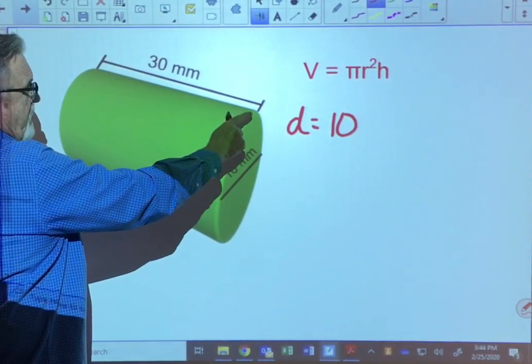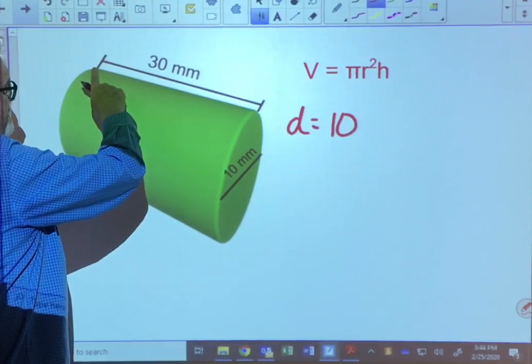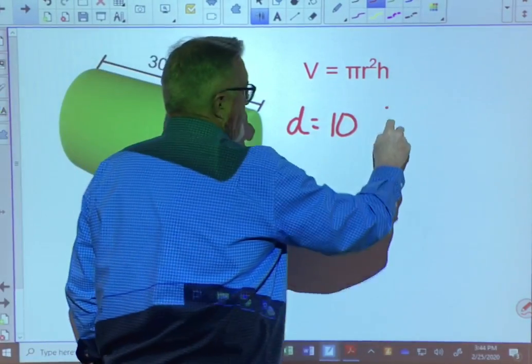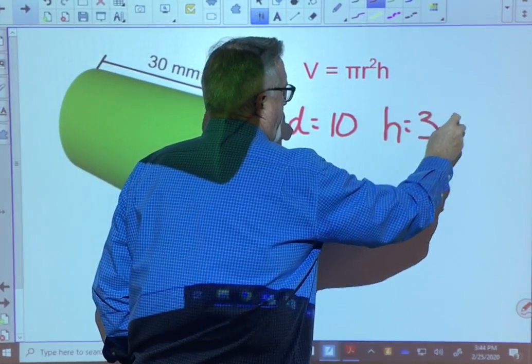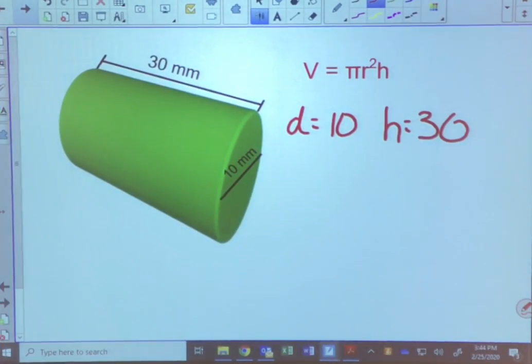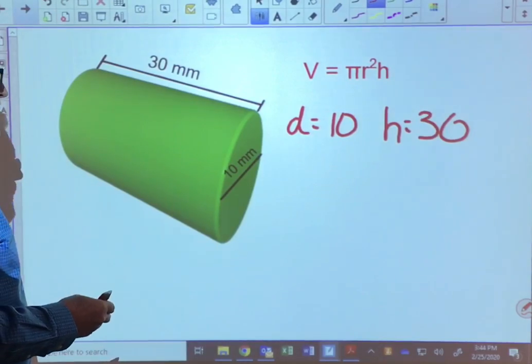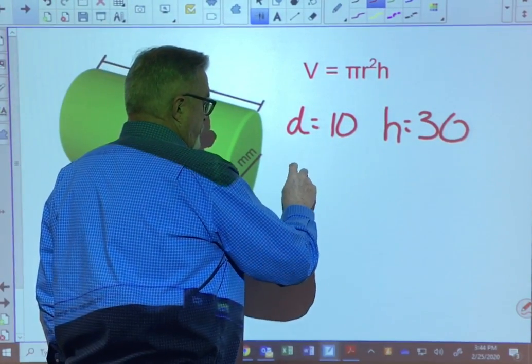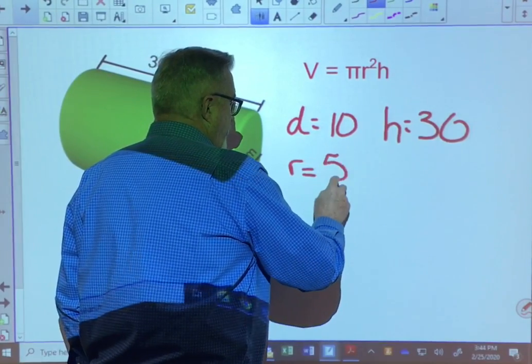It's given the height because the height is the distance between the two bases. So the height is 30. But for our formula, we're going to require to know the radius. We've learned that the relationship between the radius and the diameter is that the radius is half the diameter. So if we divide this by 2, we know that the radius is 5.